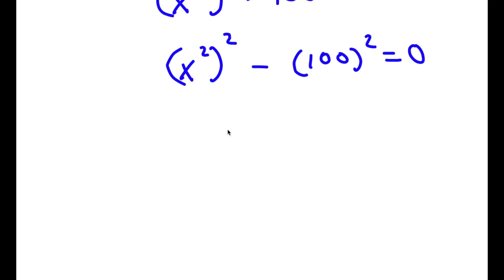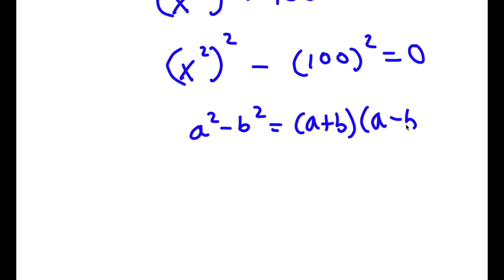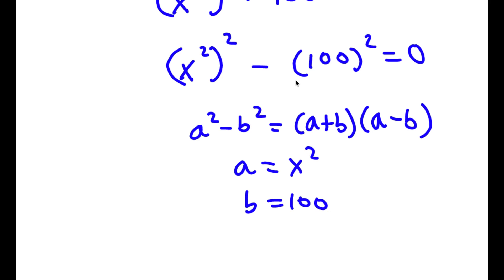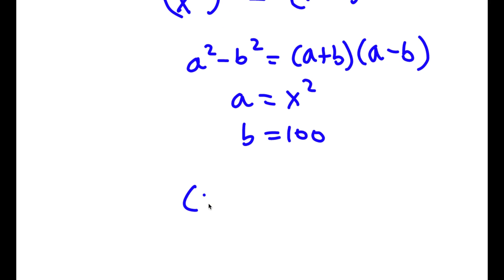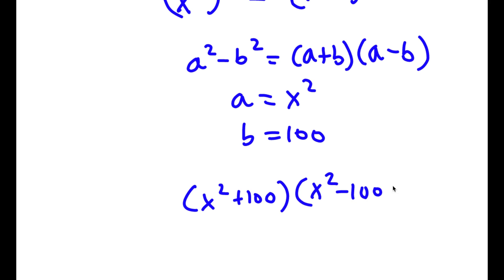Now, if I have something in the form a squared minus b squared, this is the same thing as a plus b times a minus b. So in this case, a is equal to x squared and b is equal to 100. So I have x squared plus 100 times x squared minus 100 is equal to 0.